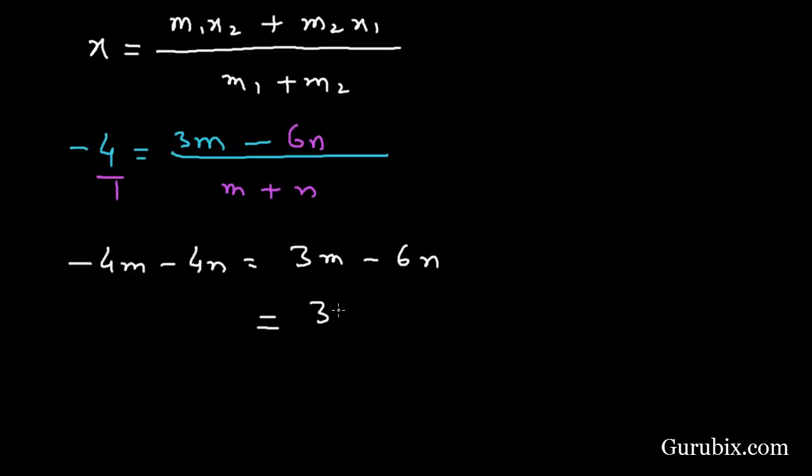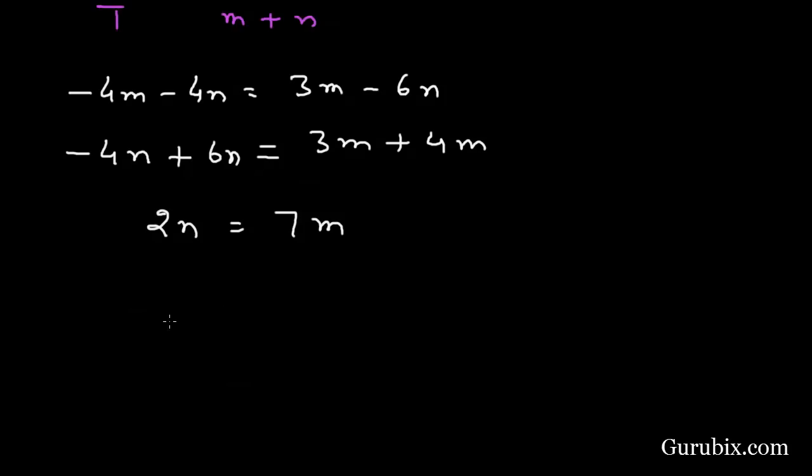Then it will be 3M + 4M, -4N + 6N. Here we have 2N, here we have 7M. Finally it equals M/N = 2/7.